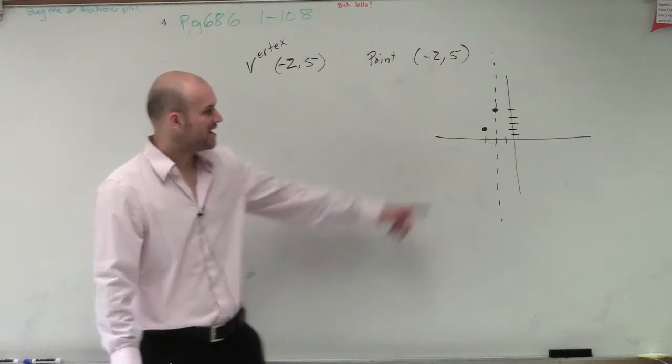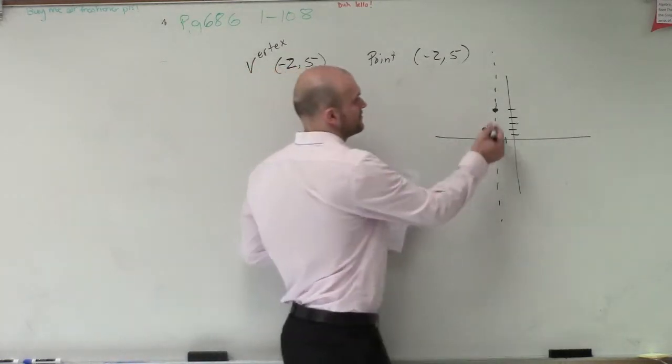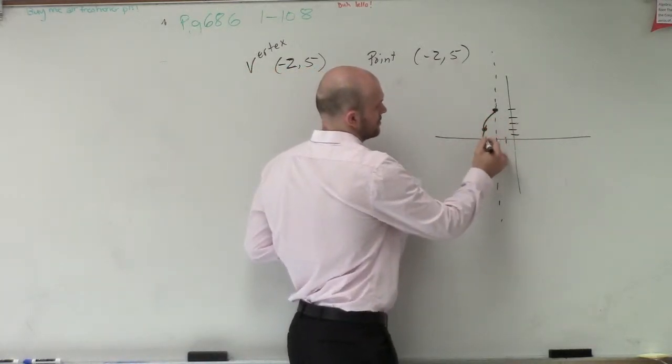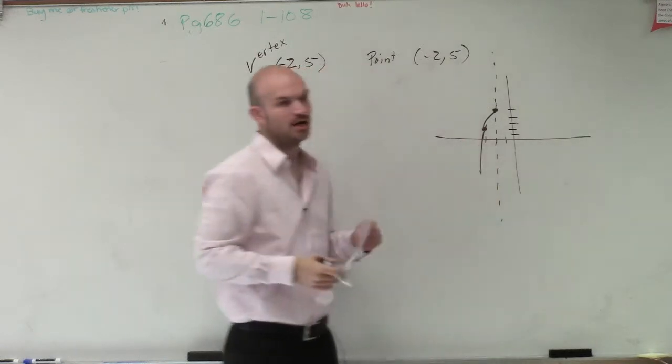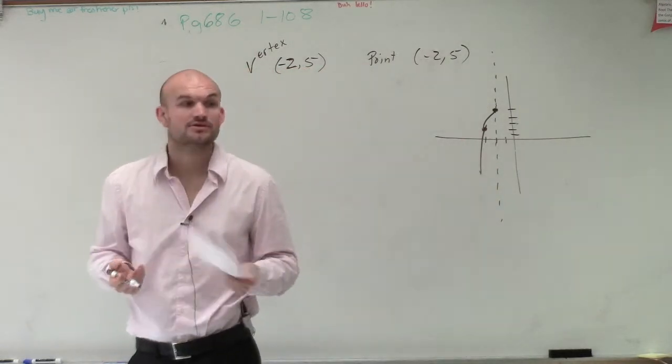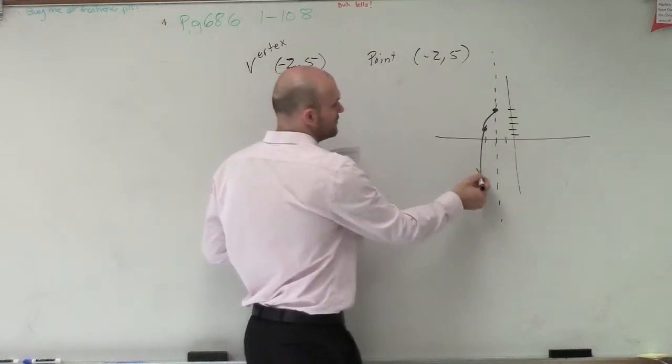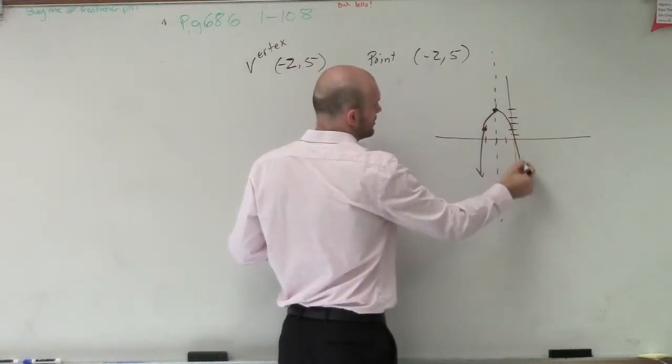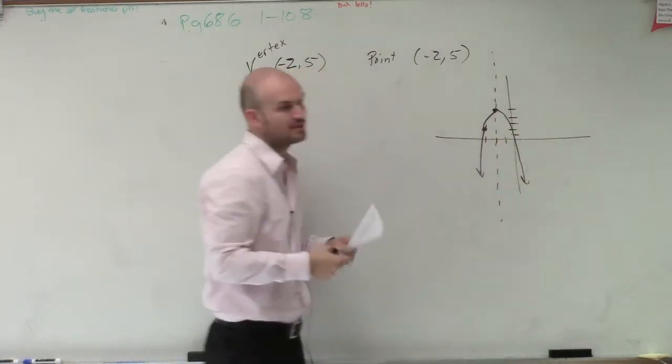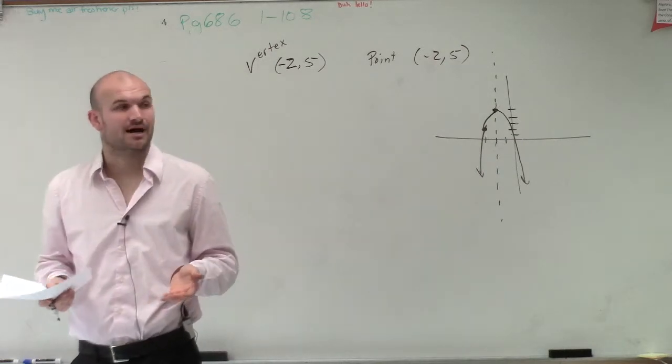So now, if we have a graph that goes through this point, is the graph going to open up or open down? It's going to open down. And therefore, when we know when a graph opens up and opens down, if we know if the graph opens up and down, therefore,